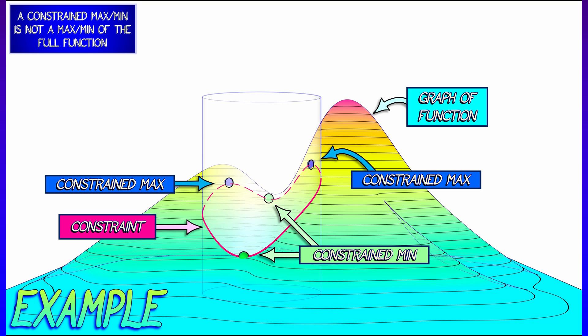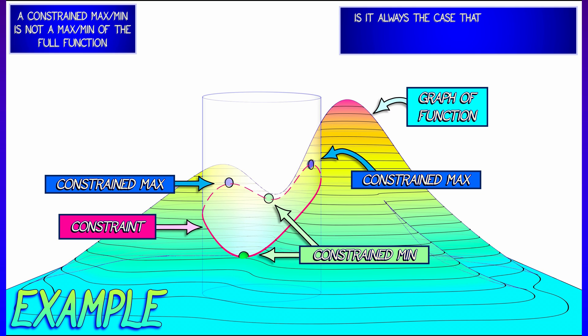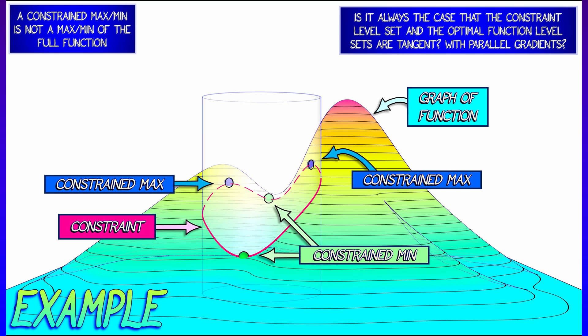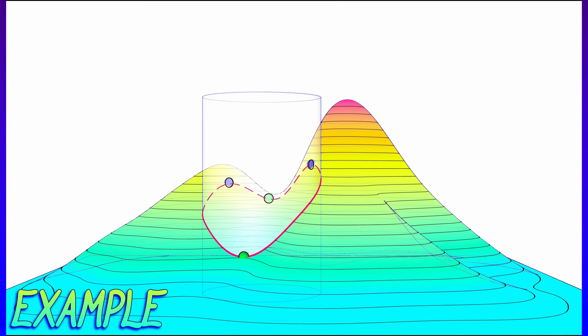Now, notice that the constrained maxima and minima are not necessarily maxima and minima of the full function. Nevertheless, it is always the case that the constraint level sets and the function to be optimized, its level sets, are tangent, having parallel gradients.